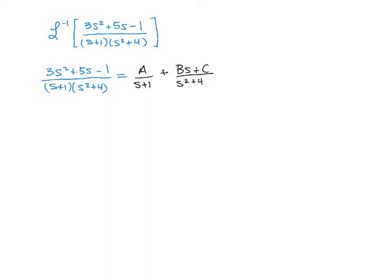And then from here, we once again multiply through by the LCD to clear out the fractions. So that's going to give us 3s squared plus 5s minus 1 equals A times that s squared plus 4 plus the (Bs + C) times the (s + 1).